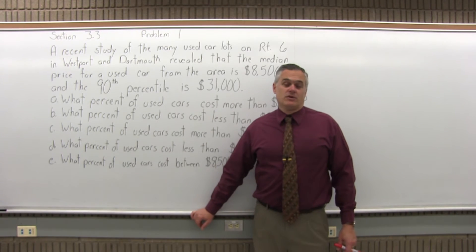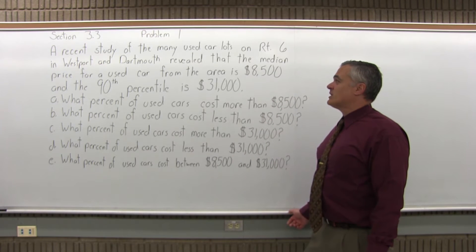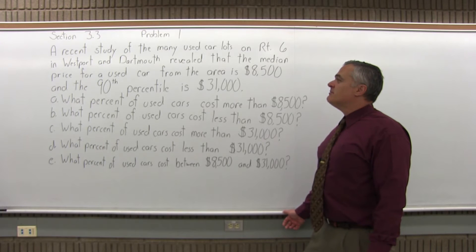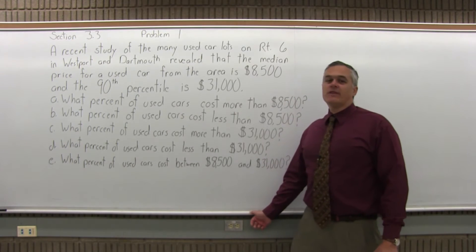This is Section 3.3, Problem 1. It says a recent study of the many used car lots on Route 6 in Westport and Dartmouth revealed that the median price for a used car from the area is $8,500 and the 90th percentile is $31,000.